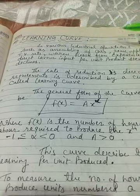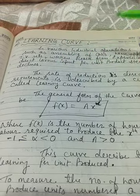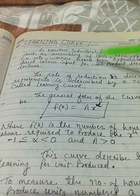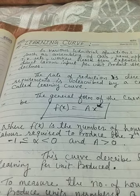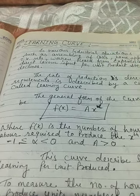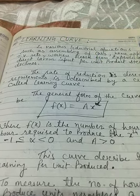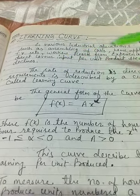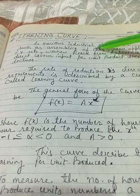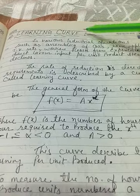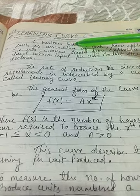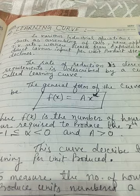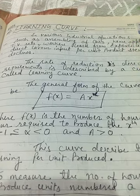In various industries, operations such as assembling cars, home appliances, and TV sets — workers learn from experience how to assemble things. If workers learn from experience, the direct labor input per unit product steadily declines. The number of laborers required to produce or assemble in different types of industries reduces as workers become experienced enough — they take less time to produce the same quantity or can increase their productivity.